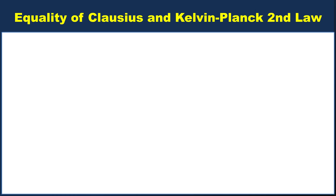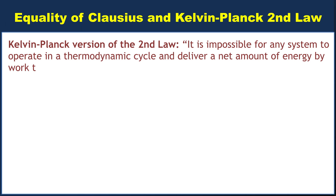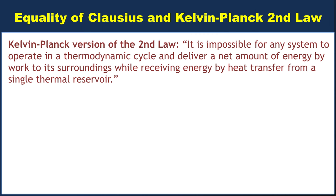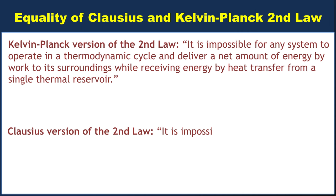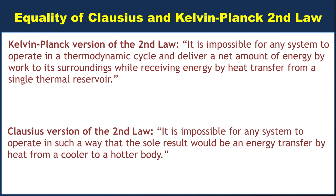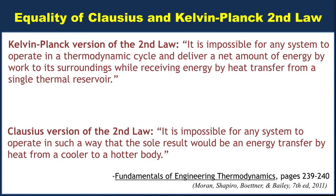I want to address a claim in your lecture notes and in your book that the Clausius and Kelvin-Planck versions of the second law of thermodynamics are equivalent. Kelvin-Planck says that it is impossible for any system to operate in a thermodynamic cycle and deliver a net amount of energy by work to its surroundings while receiving energy by heat transfer from a single thermal reservoir. The Clausius version: it is impossible for any system to operate in such a way that the sole result would be an energy transfer by heat from a cooler to a hotter body. Both of these quotes come directly from your textbook, and the claim is that these are equivalent statements.